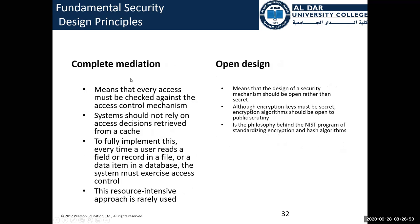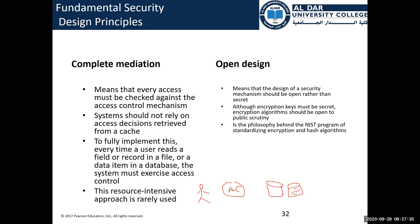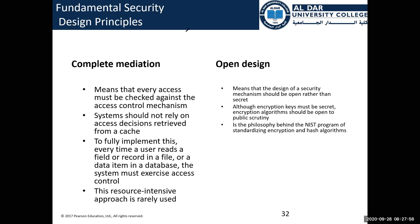Complete mediation means the security system must be the mediator between two parties: the user and the system. The access control acts as a mediator — between the user on one side and the system resources such as databases and files on the other. The access control system has full control over access, and nobody can bypass it. A mediator sits in the middle to control two parties.